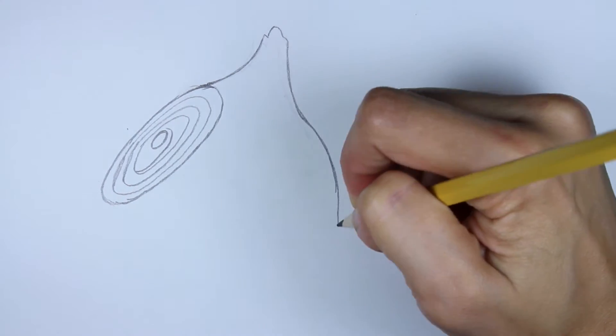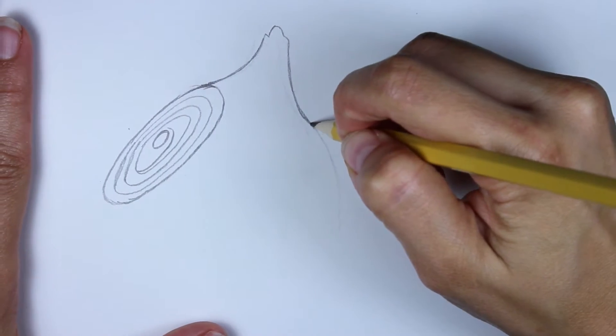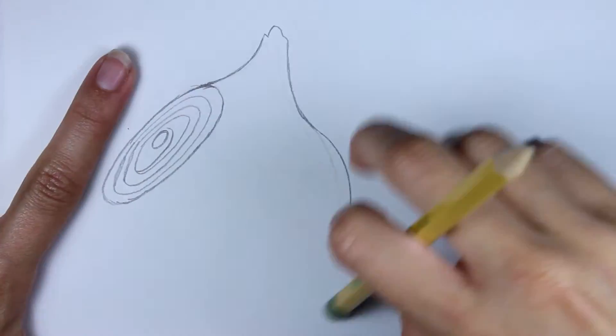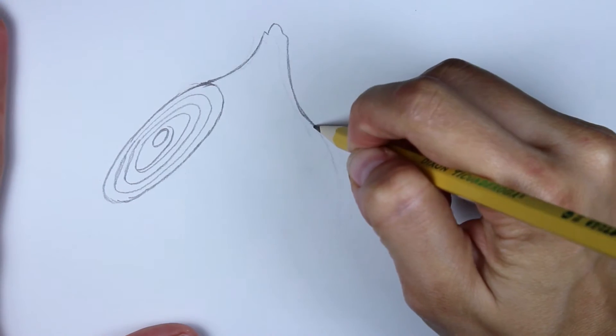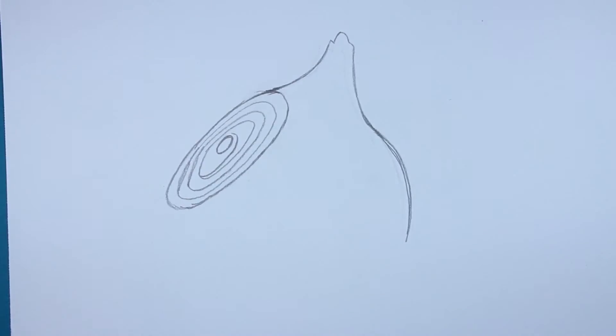And then just round out this way. And let me just fix this a little bit more. I want to make it a little bit rounder. So sometimes it takes more than one attempt, but eventually you'll get it.